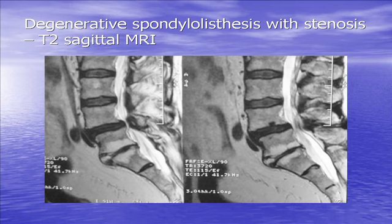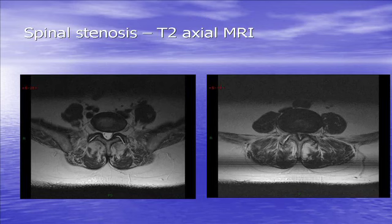That's where nerve root blocks come in really nicely — they're good for someone who doesn't want surgery or isn't fit for surgery due to multiple comorbidities. Here on this level you can see the wide patent central canal. Then at the level above — where the problem is — you can see the central canal really narrowed and thickened up. No wonder they're getting pain in there.